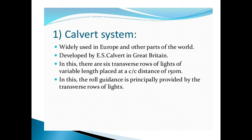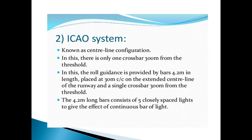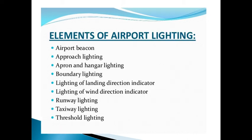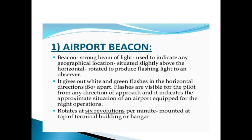The Calvert system was developed by scientist E.S.C. Calvert in Great Britain and is widely used in Europe and other parts of the world. In India, we follow the ICAO system, also known as the central line configuration system. The different types of lighting systems include: airport beacon, approach lighting, apron and hangar lighting, boundary lighting, landing direction indicator lighting, wind direction indicator lighting, runway lighting, and taxiway lighting.